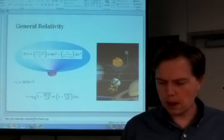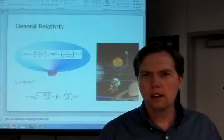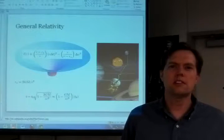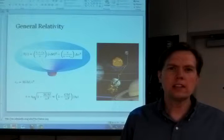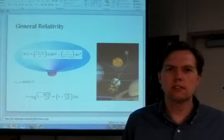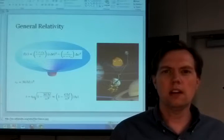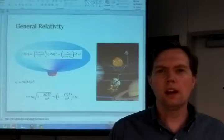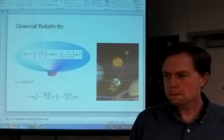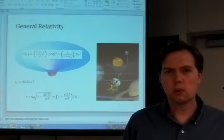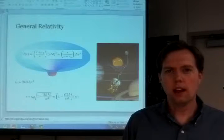General relativity really comes about from the fact that we must have a relativistic theory of gravity. Electromagnetism is naturally relativistic because that was where relativity came from, and we also know that magnetism is a consequence of relativity and Coulomb's law.